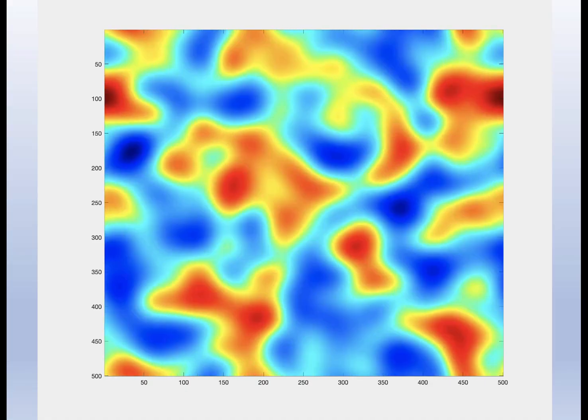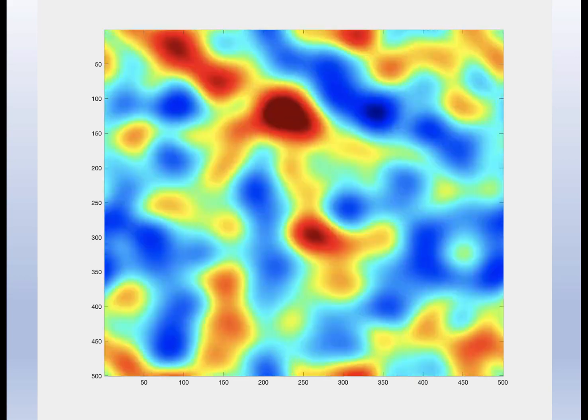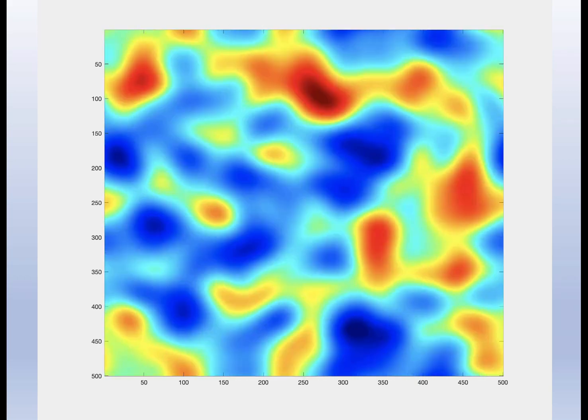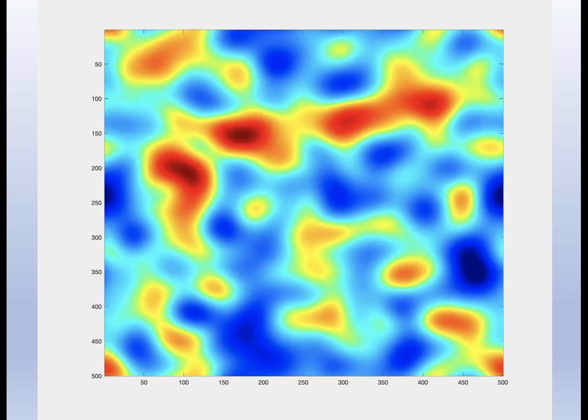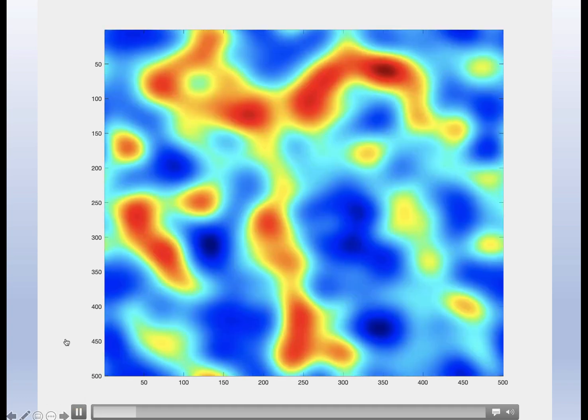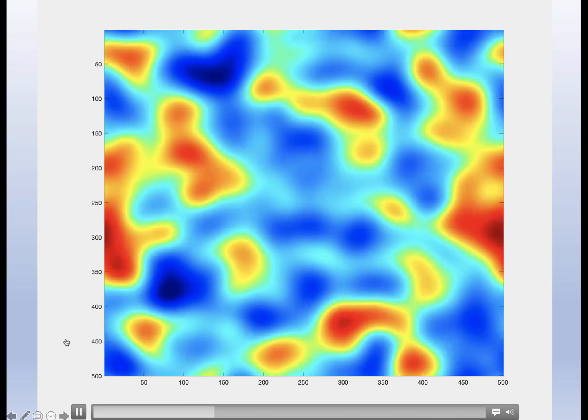This is a closer look at what's known as dynamic speckle - a speckle pattern which is changing in time. For instance, if you shine that laser pointer not on a static wall but actually on living tissue, you're more likely to see something like this.